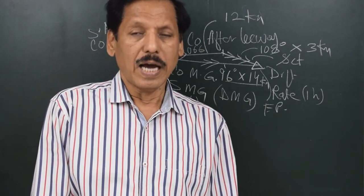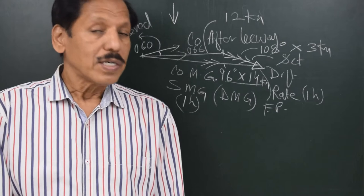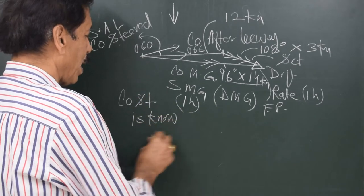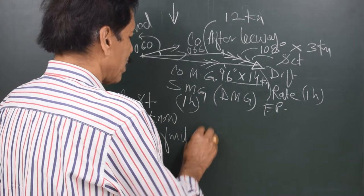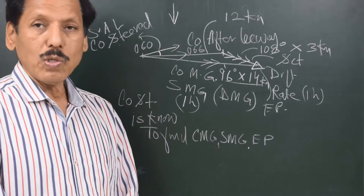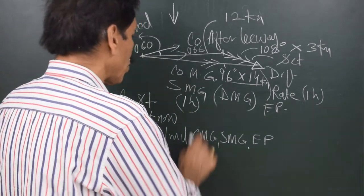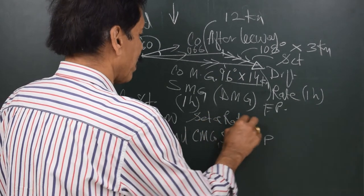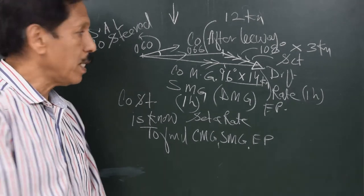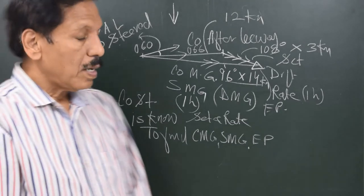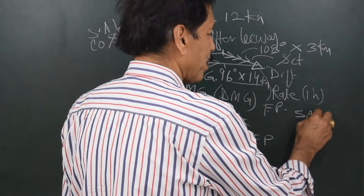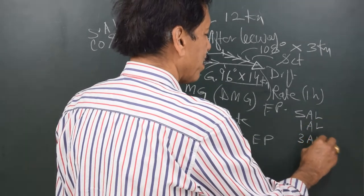This is Situation 1. In Situation 1, the course steered is known, and what you have to find is Course Made Good, Speed Made Good, and estimated position. When I know the course steered, I also know the set and rate, and what I find out is the two-arrow line — Course Made Good and Speed Made Good — and the estimated position represented by the triangle. In Situation 1, the order of plotting the lines is: small arrow line, one-arrow line, three-arrow line, and two-arrow line.